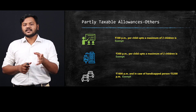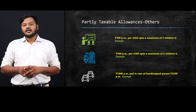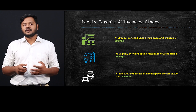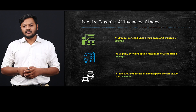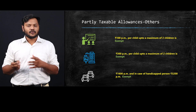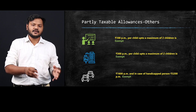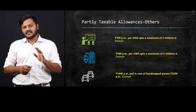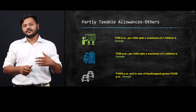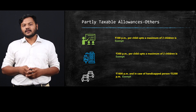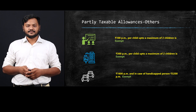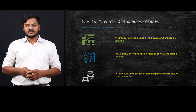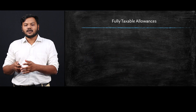For example, if your company pays you conveyance of ₹3,000 per month and you are not a handicapped employee, then ₹1,600 is exempt. Out of ₹3,000, ₹1,600 is exempted and the remaining ₹1,400 is taxable. That covers all the partly taxable allowances.